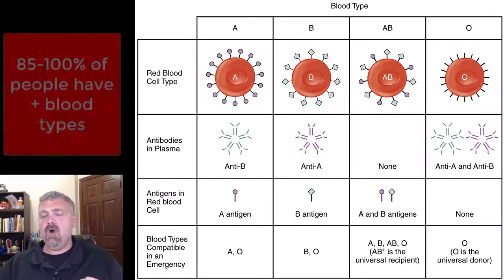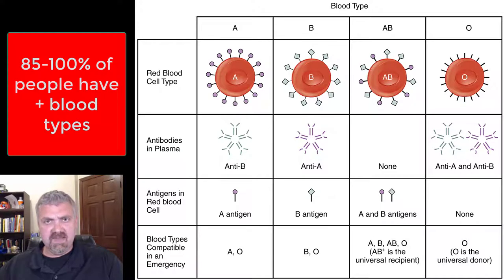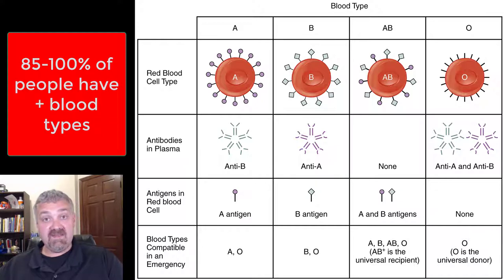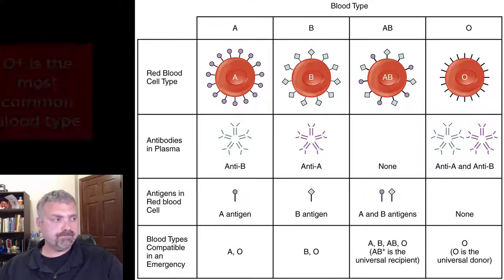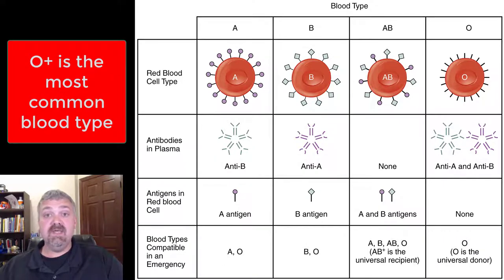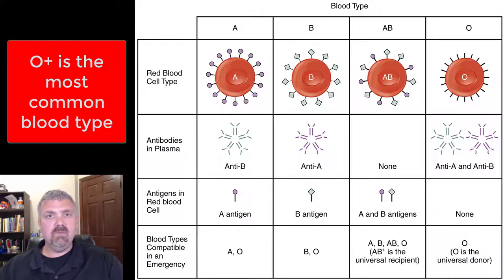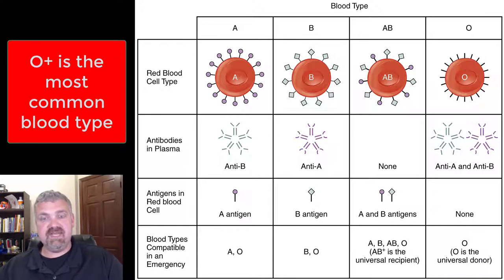The overwhelming majority of humans are RH positive, meaning they do have the RH antigens. Caucasians are the smallest group with 85% of people being RH positive. African Americans would be 95%, Hispanics are in the low 90s, and some groups are 100% RH positive. So most human beings do have positive blood types. As far as the ABO system, type O is going to be the most common in all groups, and then A and B are the second and third most common. AB is the least common, so the most common blood type in America is O positive, and the least common is AB negative.